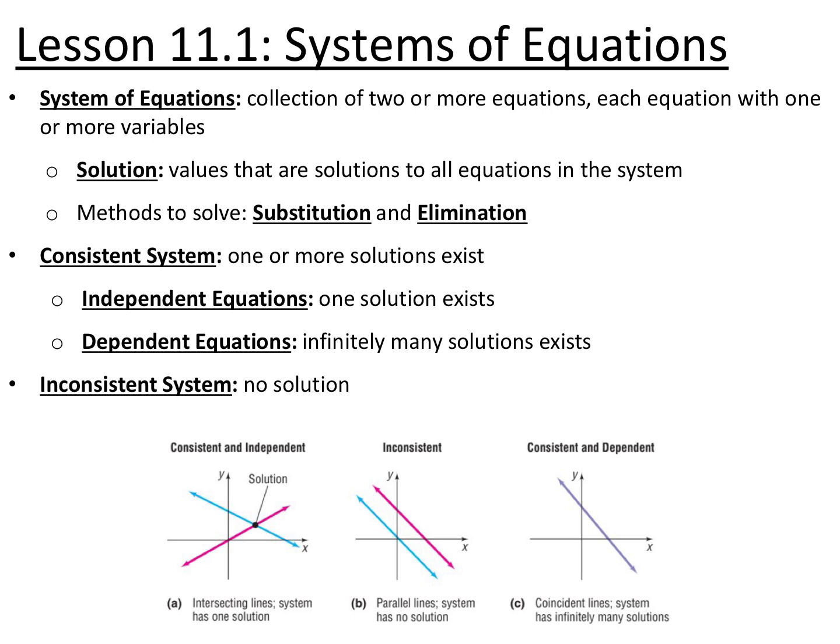A consistent system is a system that has at least one solution, and an independent system has exactly one solution, whereas a dependent system has infinitely many solutions. If we look here, we have a consistent and independent system of linear equations, so there's exactly one solution.